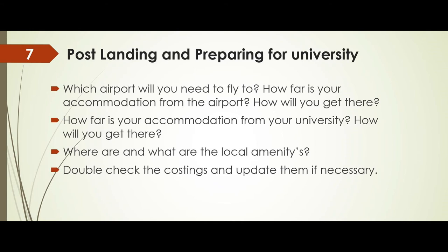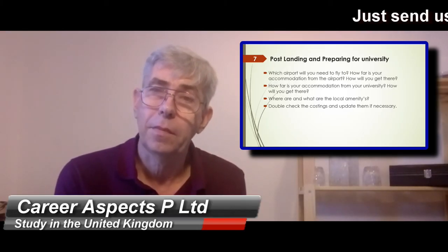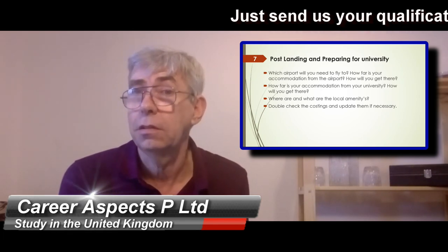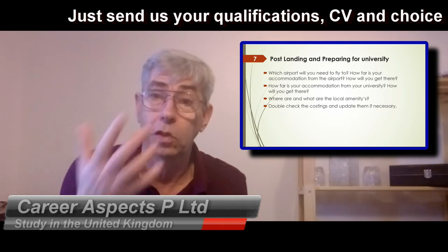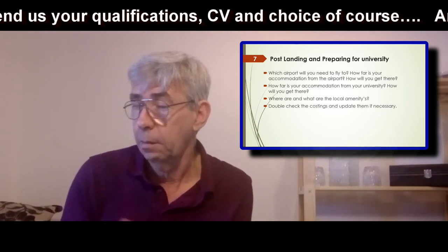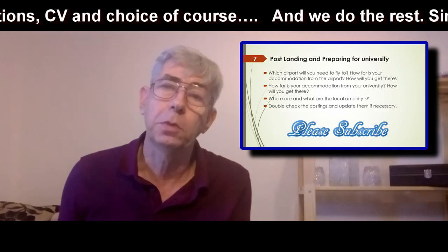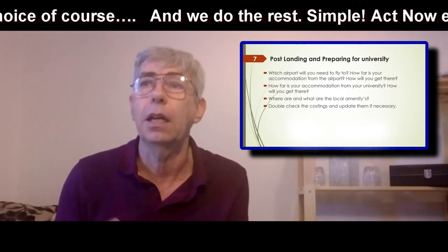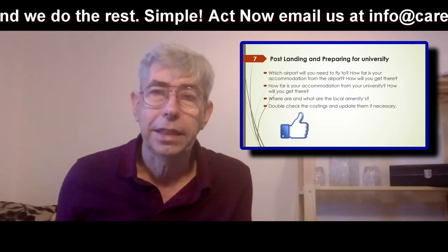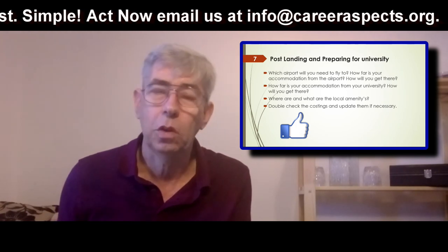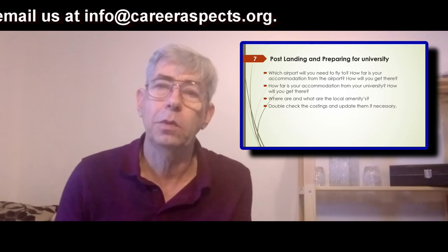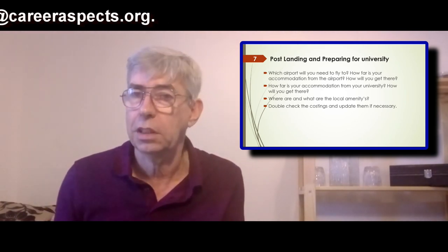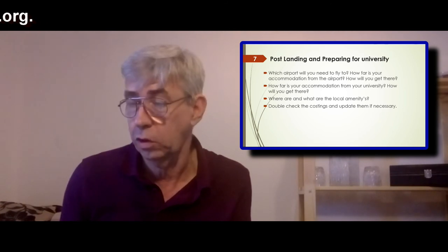Section seven — post-landing preparation for university. You've got your airport sorted out, but how do you get from the airport to your accommodation, and how do you get from your accommodation to your university? Check these out and look at the prices. Consider books, local amenities, where the food shops are, where the laundrettes are, where the local services are. Get on the internet and research all of this — what is around in the area. We will be doing more detailed videos and worksheets for you on this subject.